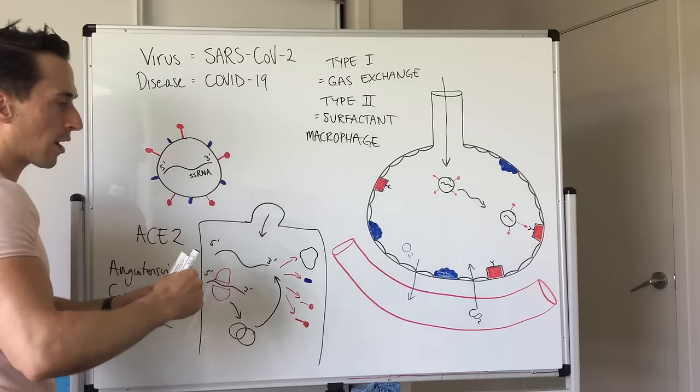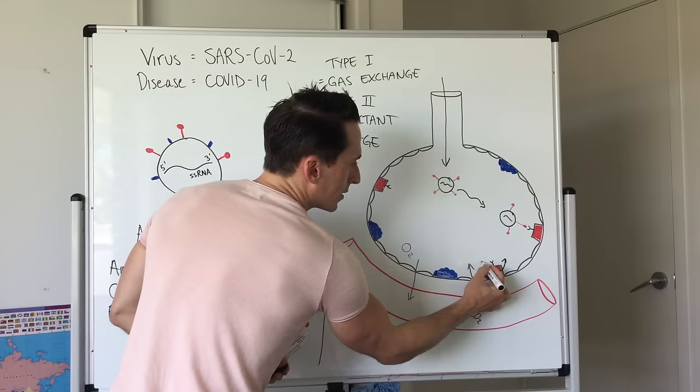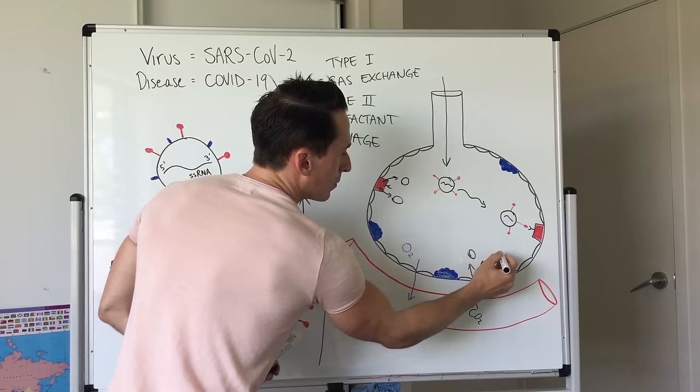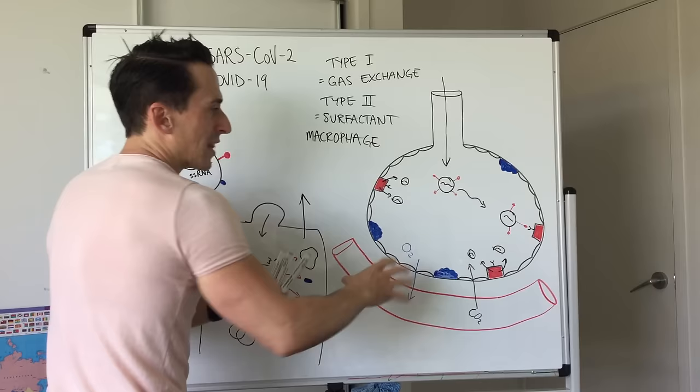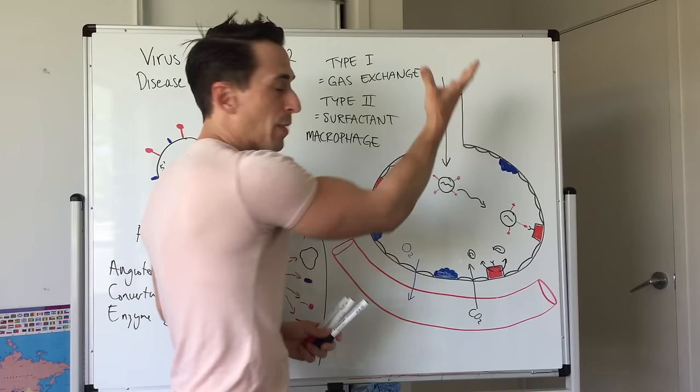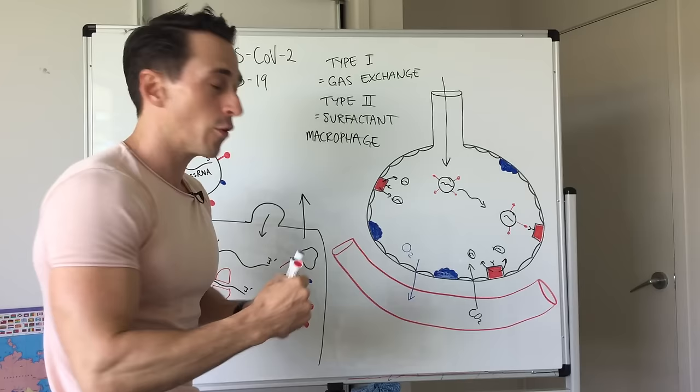Which means it starts to release from these cells and what we end up having are millions and millions of these viral particles now being released into the alveoli and this leads to irritation. This irritation can lead to coughing, and coughing can then expel these viruses out into the atmosphere in respiratory droplets and facilitate further spread.